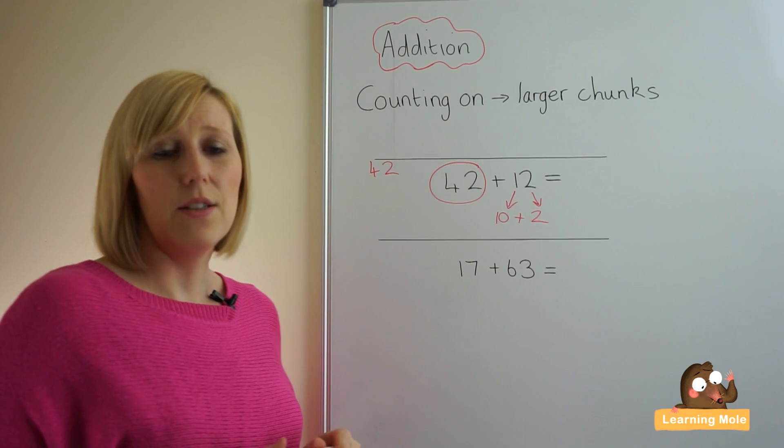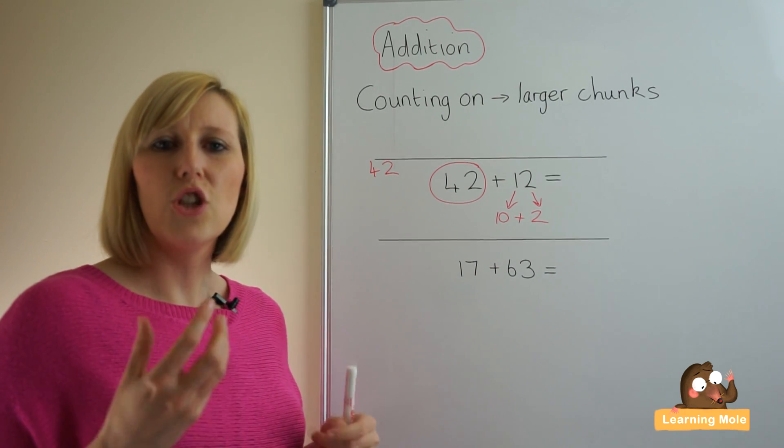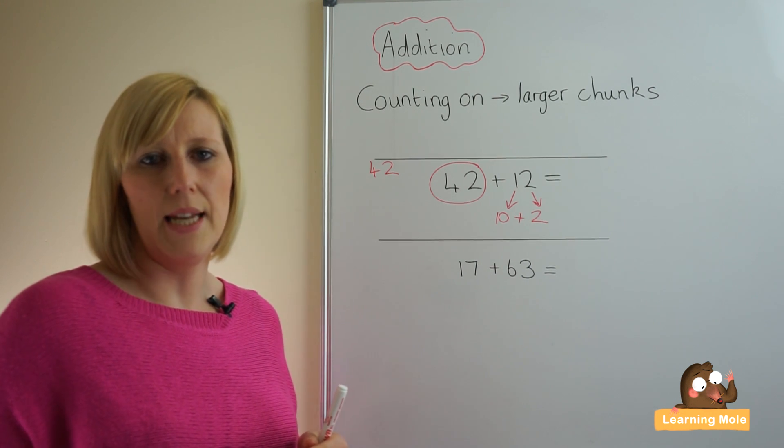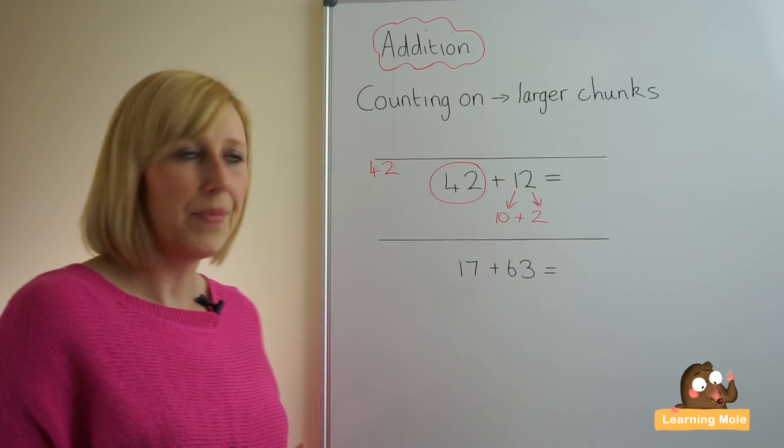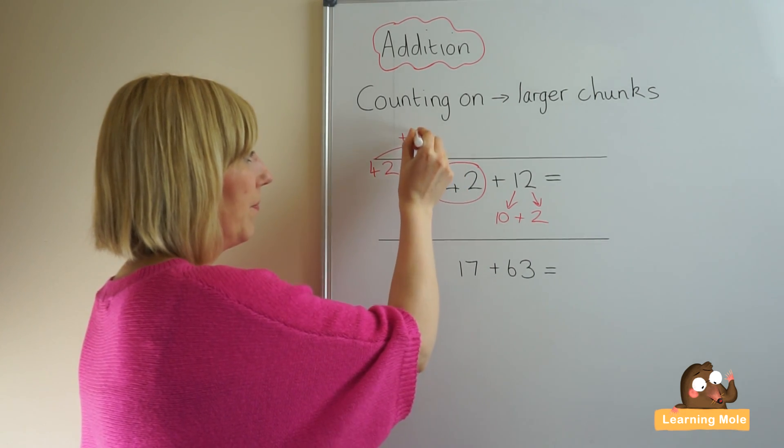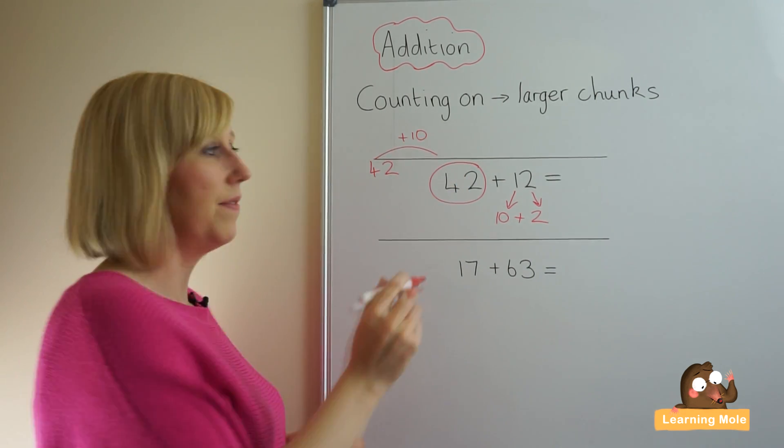The first number we're going to add on is our ten, so we're going to add on that chunk. And at this stage your child should be able to count in steps of ten, adding ten to any number. So what we're going to do is add on that ten to our 42, which brings us to 52.